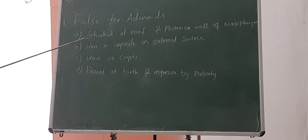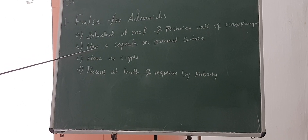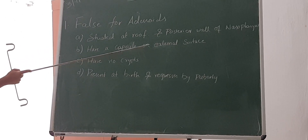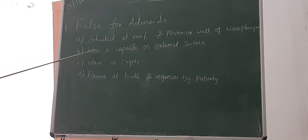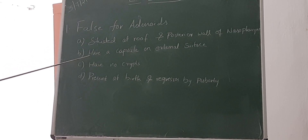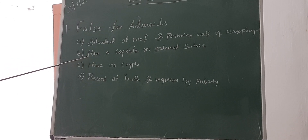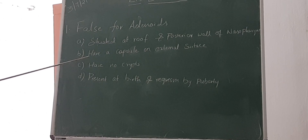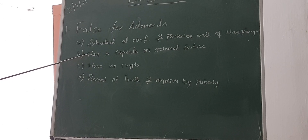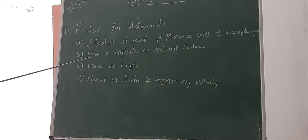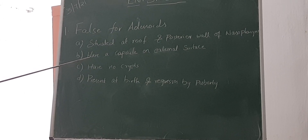Second point, B: it has a capsule on the external surface. Is it a correct statement? No, false. So, capsule is absent in adenoids. It is present in tonsil.